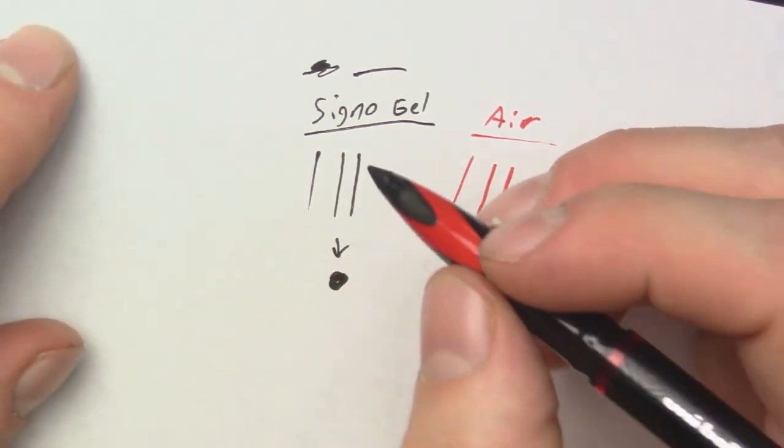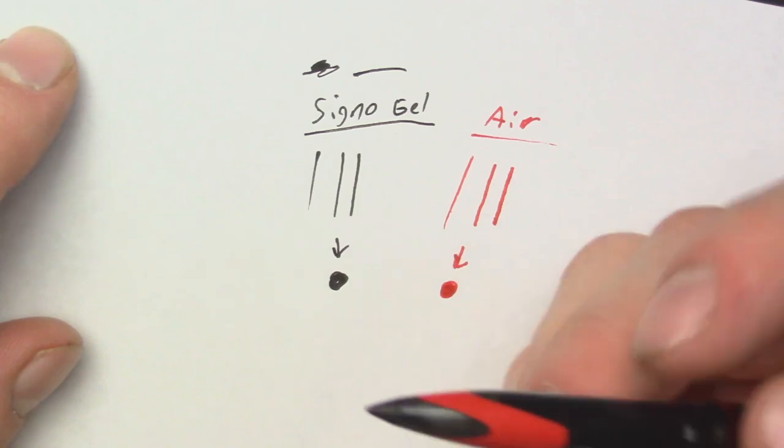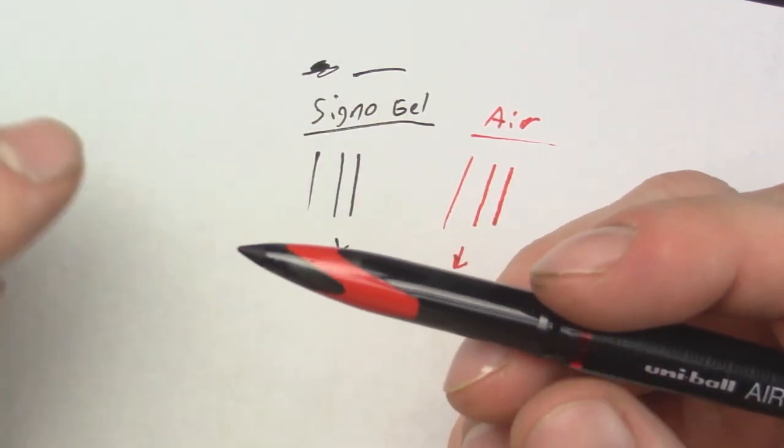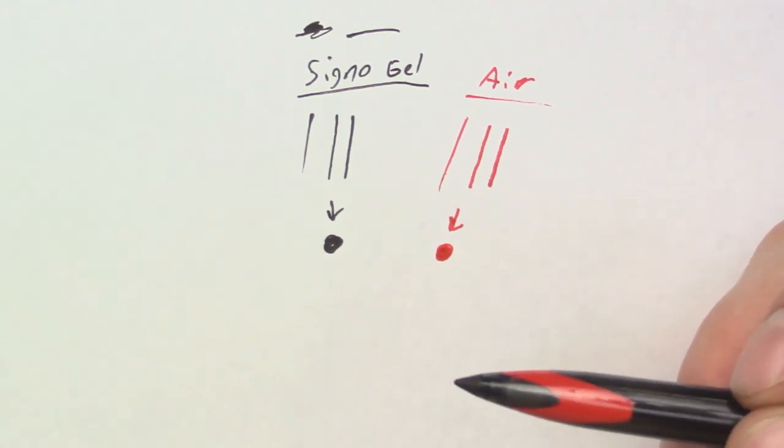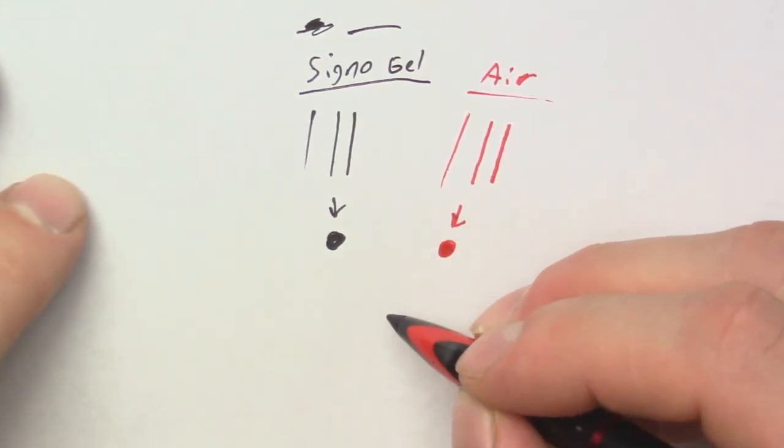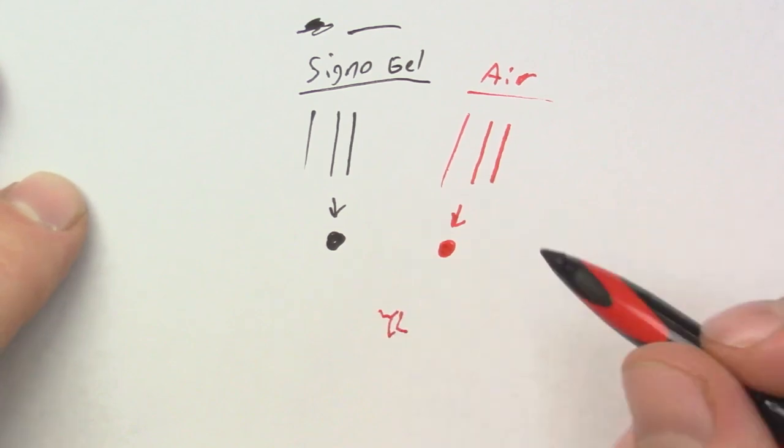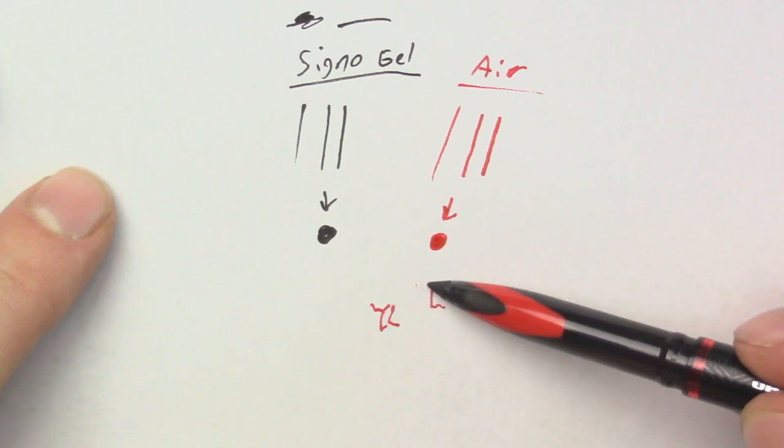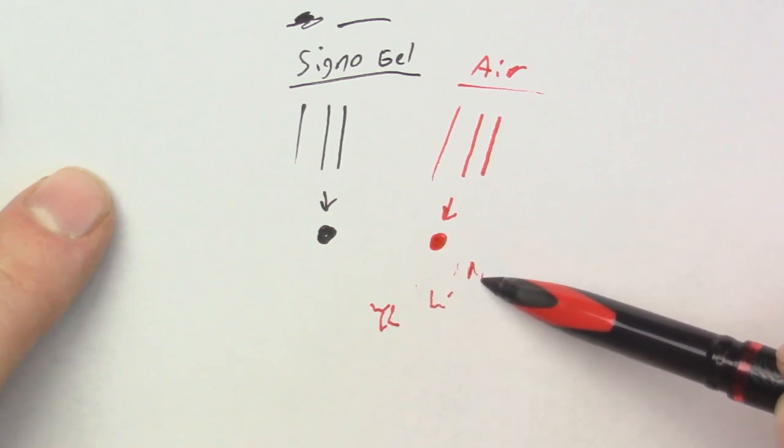And one more thing I will mention about this pen here is that you have a smoother writing experience with it, and not only that but with this pen you can write with it at more of an angle. I'll give you a comparison of that as well. So if you're usually drawing like this or writing, you can hold it at a very steep angle and still get your lines.